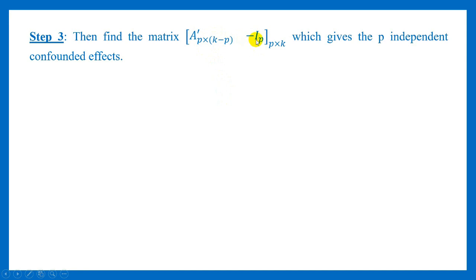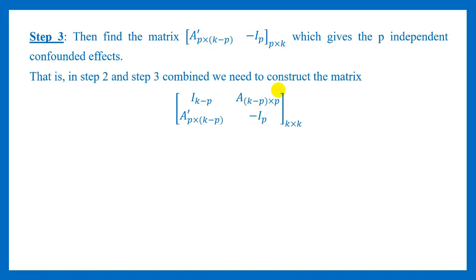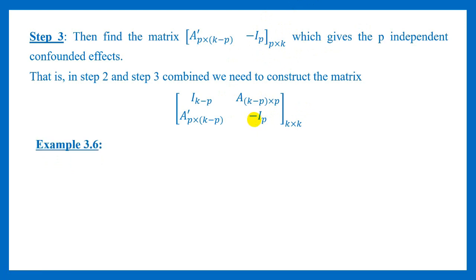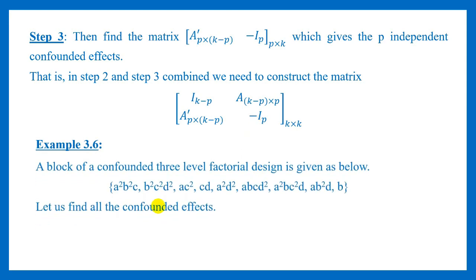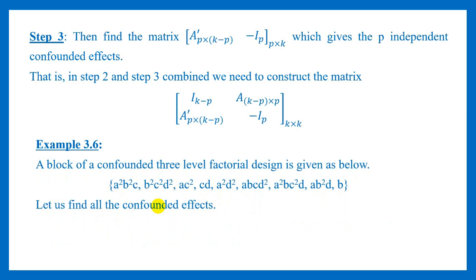This matrix A' and -I of order P will give you your P independent confounded effects. So all you have to do is find an augmented matrix of order k by k with augmented matrices being I, A, A', and -I. The first identity matrix should be of order k minus P and the last identity matrix should be of order P. This -I_P matrix is a diagonal matrix with all diagonal elements equal to 2.